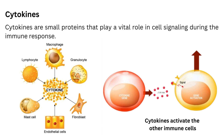Cytokines are small proteins that play a vital role in cell signaling during immune responses. They initiate immune cells to perform their functions. Different immune cells — macrophages, lymphocytes, granulocytes, fibroblasts, endothelial cells, and mast cells — all release cytokines to initiate the functions of other immune cells, serving as communication between cells of the immune system.